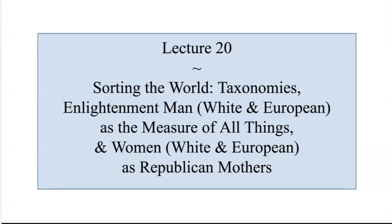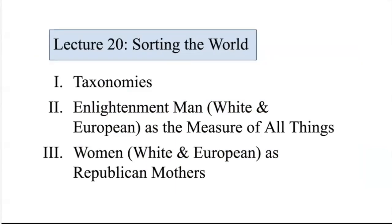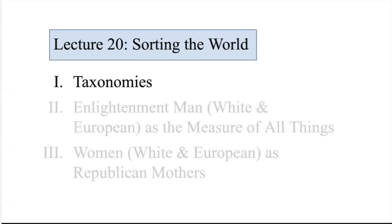Taxonomy is the science of classification. In this lecture, we will look at the way that Enlightenment ideas of sex and gender were read onto nature, and then nature was taken as the basis of sex and gender. In Enlightenment minds, sex became the organizing principle, not just of human society, but of all life.